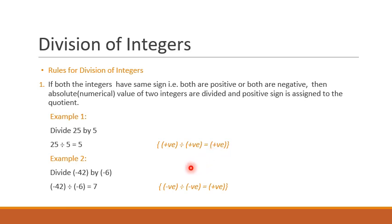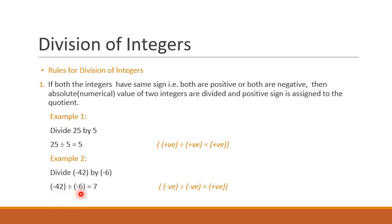Now let's see one more example. Divide minus 42 by minus 6. Here both the integers have negative sign, that is the sign of both the numbers is same. So divide the numbers: 42 divided by 6 gives me 7. And since both the integers were negative, the answer is positive. So if both the integers have same sign, the answer is positive. Negative divided by negative gives me positive, same as in multiplication.